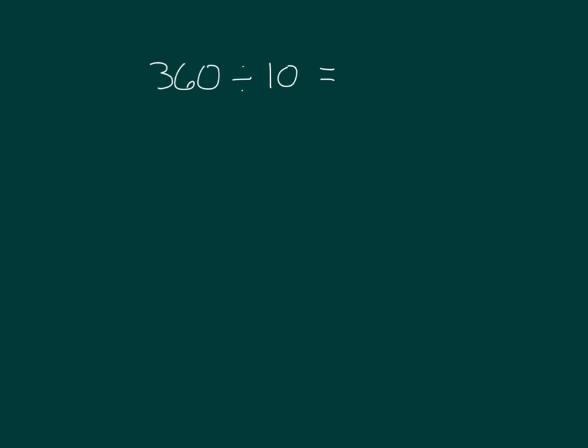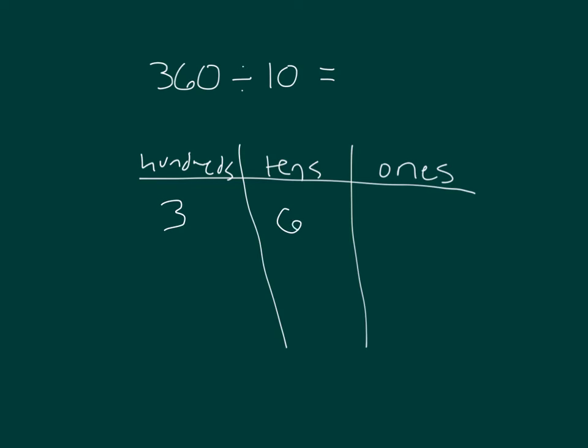Let's solve this problem using a place value chart, 360 divided by 10. 100s, 100s, 10s, 1s. First we'll model 360 in our chart. So when we model 360 in our chart, we have 3 100s, 6 10s, and 0 1s.